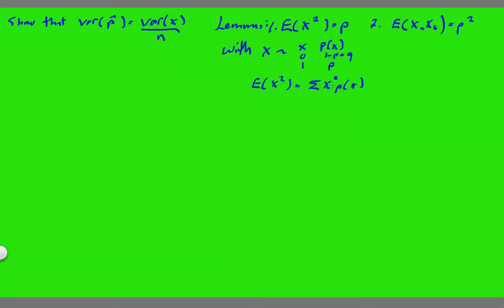Well this is a very straightforward computation over all values of x. This would just be 0 squared times q plus 1 squared times p, which is equal to p. Done.